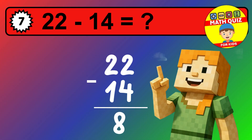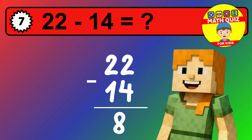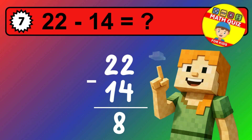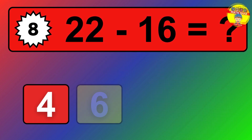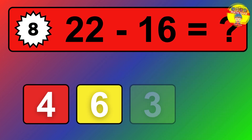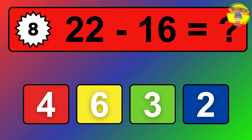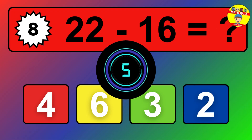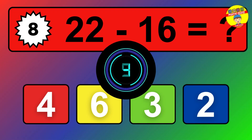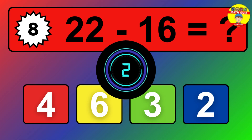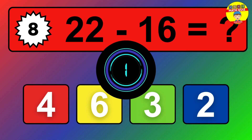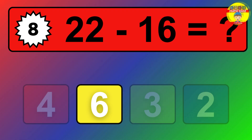We start with the units. 1 minus 5 is not possible, so we need to regroup. We take one 10 from the tens column. Now we have one tens, and the units become 11. Now we subtract. 11 minus 5 is 6. Then we go to the tens. 1 minus 1 is 0. The final answer is 6.